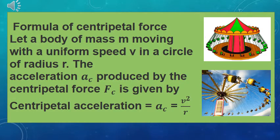Now we have to see the formula of centripetal force. Let a body of mass M be moving with a uniform speed V in a circle of radius R. The acceleration AC produced by the centripetal force FC is given by centripetal acceleration AC, which is equal to V squared over R.